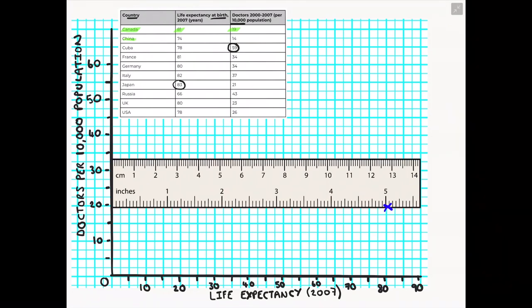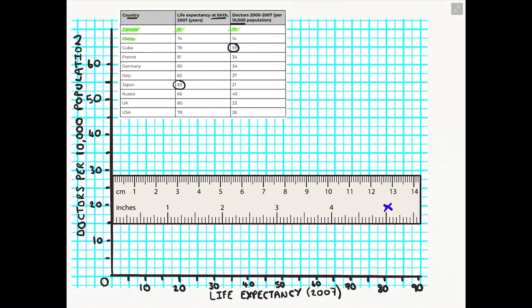Now we're going to repeat the process and mark China on our scatter graph. So I'm going to take the ruler and move it in line to the number of doctors per 10,000 of the population. Then I'm going to work from my x-axis. I'm going to guide a line up to my ruler to ensure I'm still in line with my life expectancy. And when it hits my ruler, I'm going to draw an x.